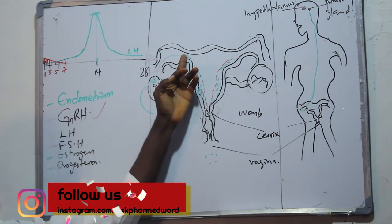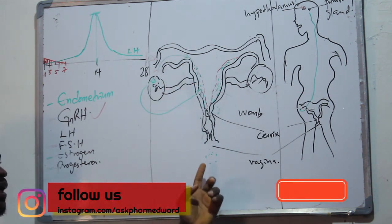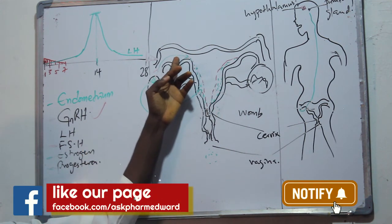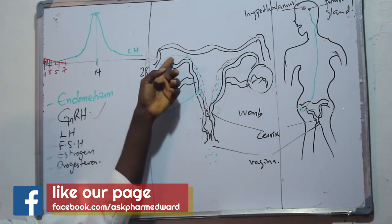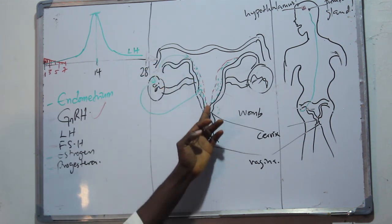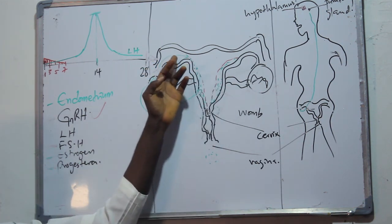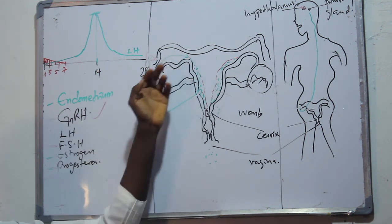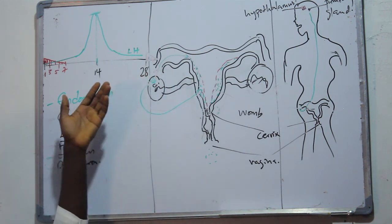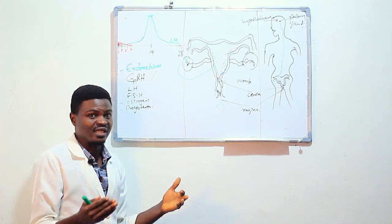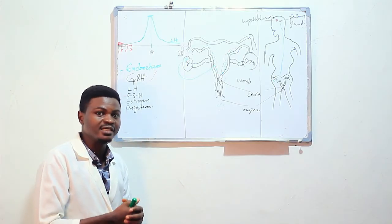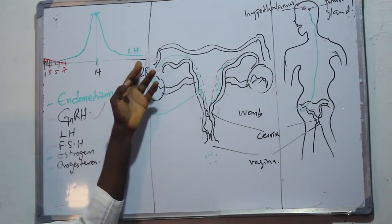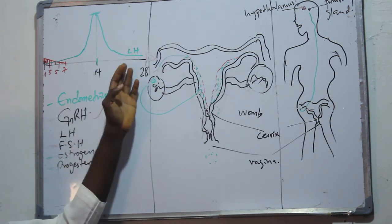The egg has already started its journey through the fallopian tube into the womb. The egg has two fates: one fate is for it to get fertilized by a sperm, the other fate is for it to die. If there is sperm, the egg obviously gets fertilized. If there is no sperm, within 12 to 24 hours the egg dies off. When the egg dies off, of course there had been no fertilization.